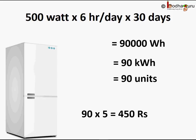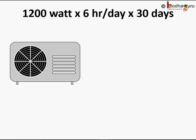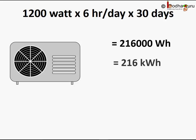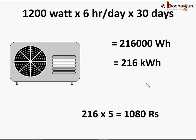If the unit price of electricity is five rupees, you have to pay 90 into five, which equals 450 rupees. Now say a one-ton AC consumes 1200 watts and you run it for six hours daily. The units consumed per month will be 1200 into six hours per day into 30 days, which equals 216,000 watt-hours. Dividing by 1000 gives 216 kilowatt-hours — that is 216 units of electricity. At five rupees per unit, the electricity bill will be 216 into five, which equals 1080 rupees.